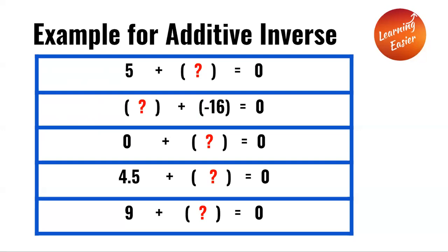5 plus negative 5 equals zero. Next: a number plus negative 16 equals zero. The additive inverse of negative 16 is 16, so 16 is the answer for this question.